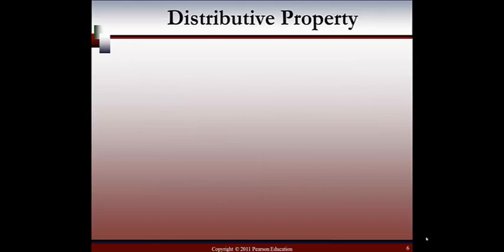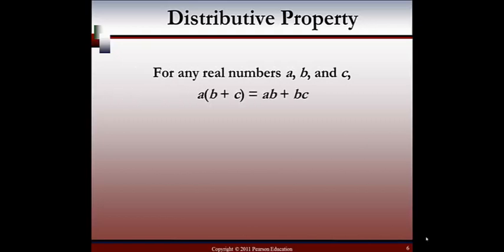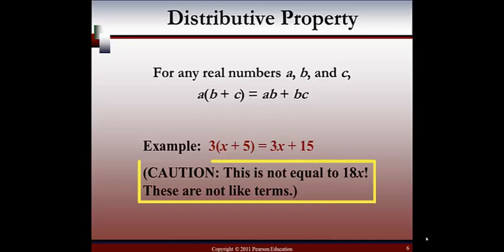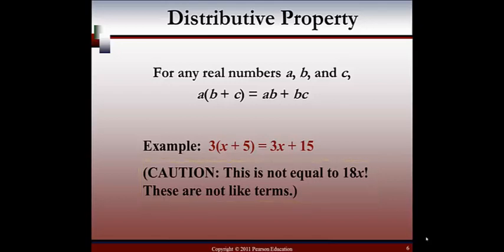Next, we're going to do the distributive property. For any real numbers a, b, and c: a times (b plus c) equals ab plus ac. The distributive property was discussed in Chapter 1, Section 10. Here's an example: we have 3 times (x plus 5), which equals 3x plus 15. We distributed the 3 to each term inside. A word of caution: this does not equal 18x. These are not like terms — we have 3x and 15. The 15 does not have the variable x next to it, so we cannot combine it with 3x. That is a very common and easy mistake, so be careful.